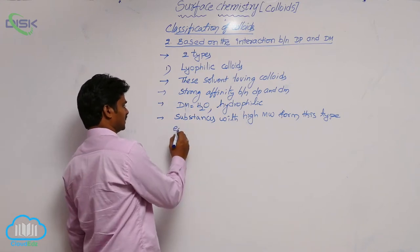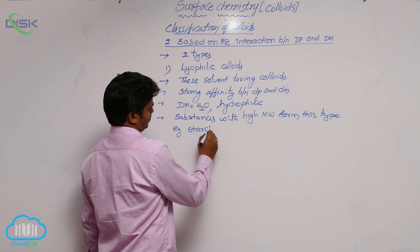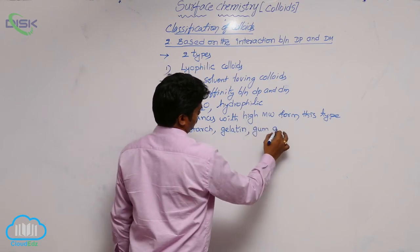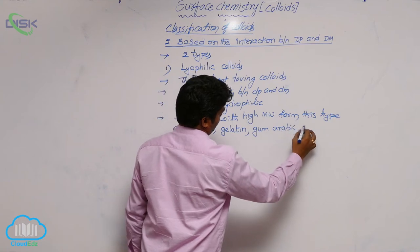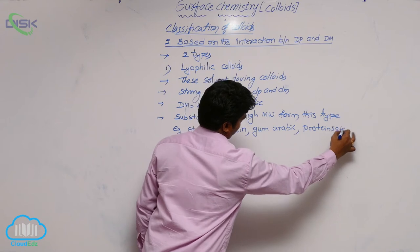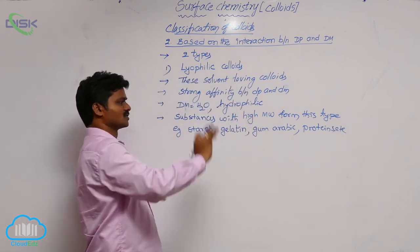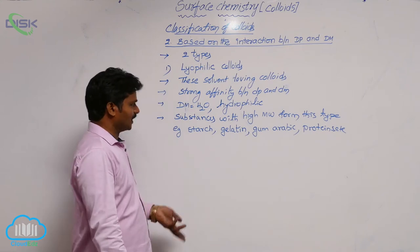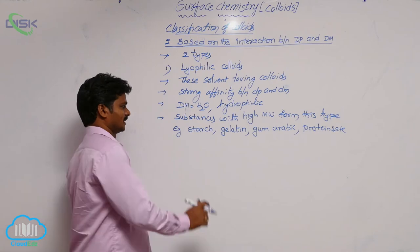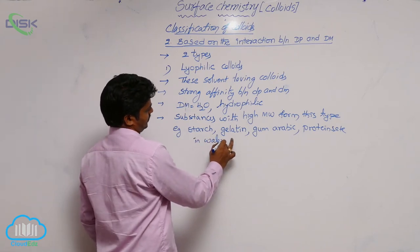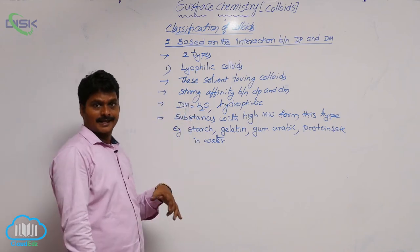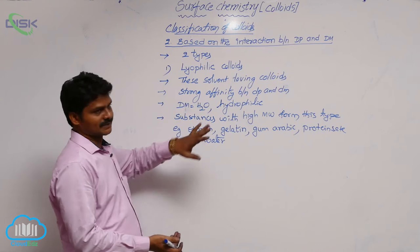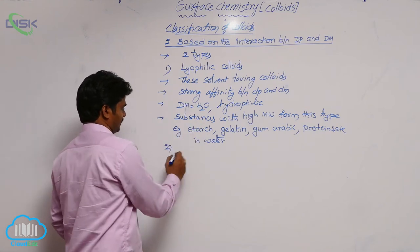Examples of lyophilic colloids include starch, gelatin, gum arabic, and proteins. These compounds in water form hydrophilic (lyophilic) colloids. So lyophilic colloids are characterized by strong affinity between the dispersed phase and dispersion medium.